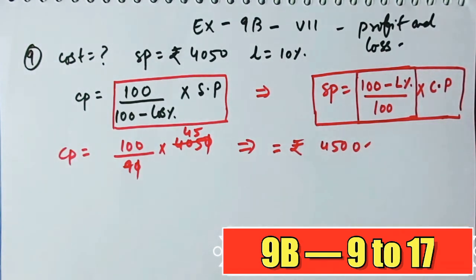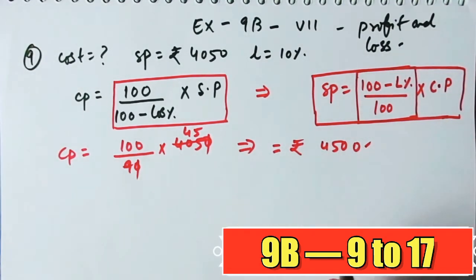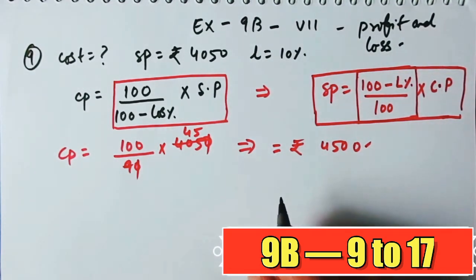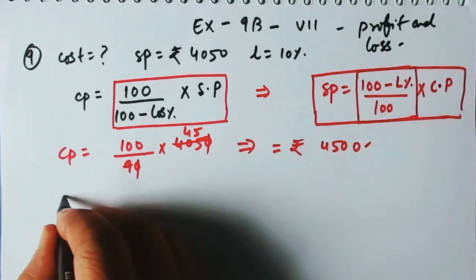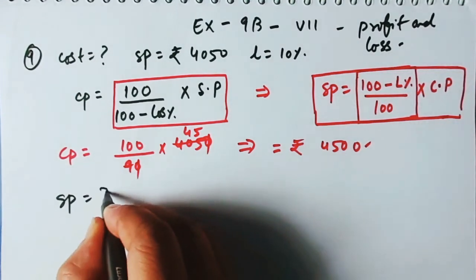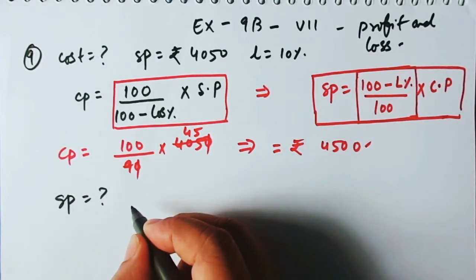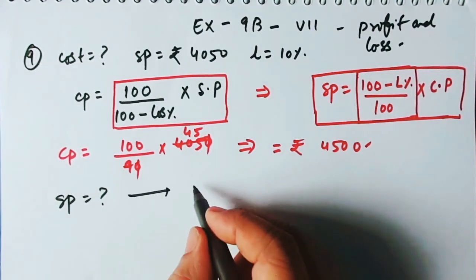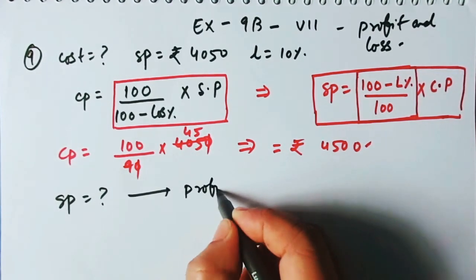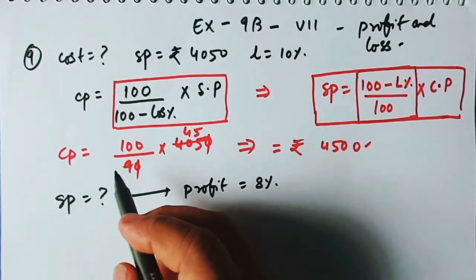Number 9 also asks us to find the new selling price of the article that must give a profit of 8%. So we now need to find the SP based on the cost price we just found.